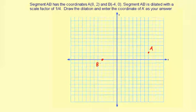Segment AB is dilated with a scale factor of 1/4. Let's finish drawing the segment here first. So dilating with a scale factor of 1/4, that means you divide each of these coordinate values by 4.